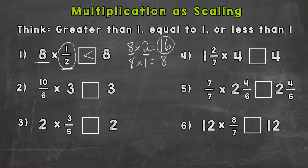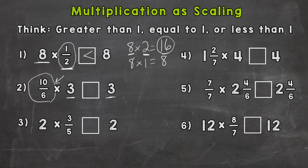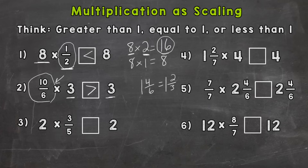Let's take a look at number 2. We have a 3 on both sides. We're multiplying this 3 on the left-hand side by 10 sixths — an improper fraction. We need to think: is that fraction greater than 1, equal to 1, or less than 1? That will tell you if it's going to raise the value of our answer. Well, this fraction — 10 over 6 — is greater than 1 whole. It actually equals 1 and 4 sixths, or 1 and 2 thirds simplified. So this side is going to give us an answer greater than 3. 10 sixths times 3 is greater than 3.